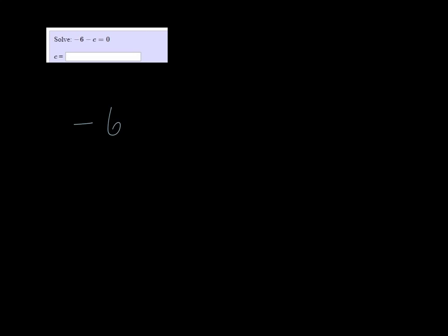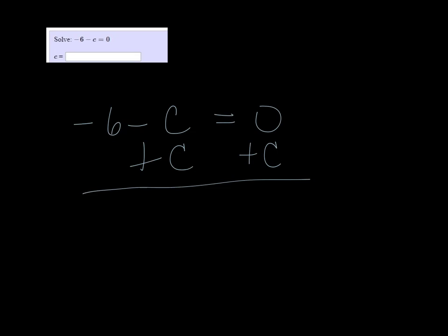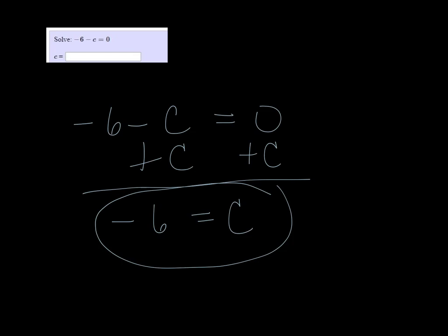We're solving negative 6 minus C is equal to 0. I'm going to try to get C by itself. Since there's nothing on the right side, if I add C to both sides, then I get negative 6 equals C. C is by itself, so the answer is C equals negative 6.